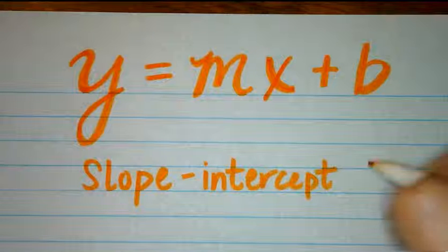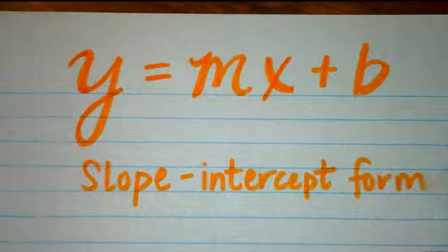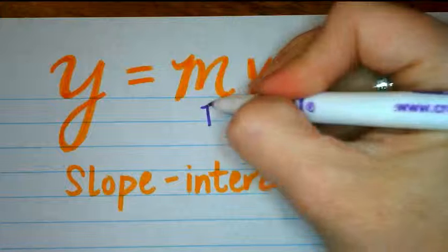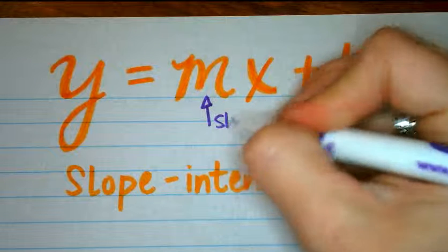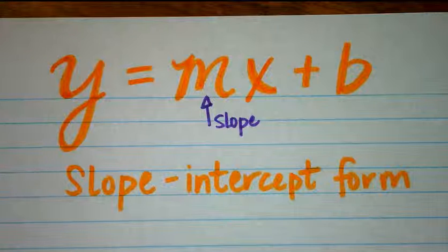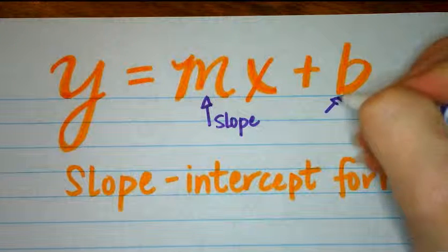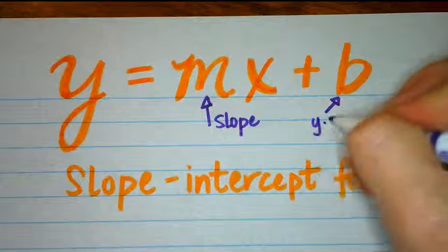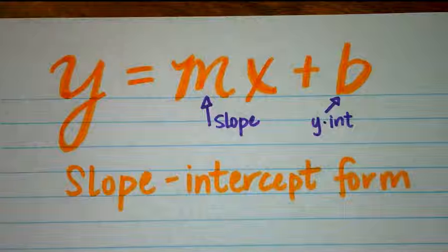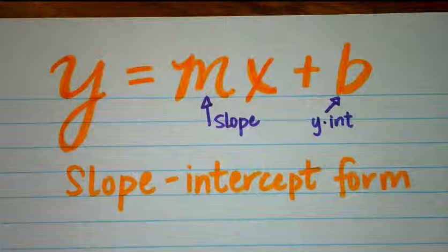The reason why it's called slope-intercept form is because when you look at this equation, this number right here will be your slope. We always use m for the slope. And this number right here is the y-intercept. The y-intercept is where your line crosses the y-axis.